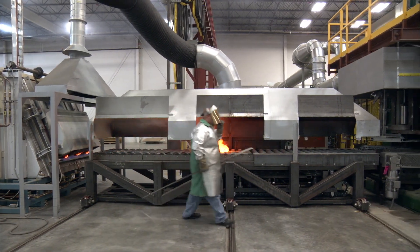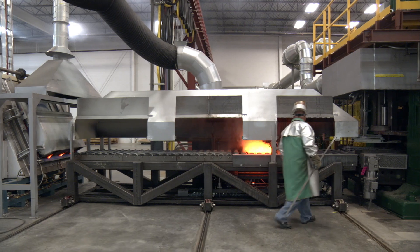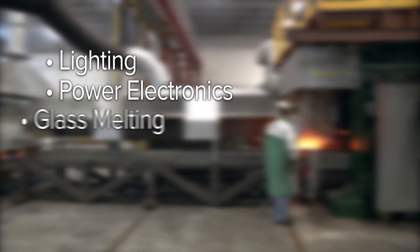Elmet manufactures raw material and finished products for a number of additional industries, including lighting, power electronics, glass melting, nuclear, and others.